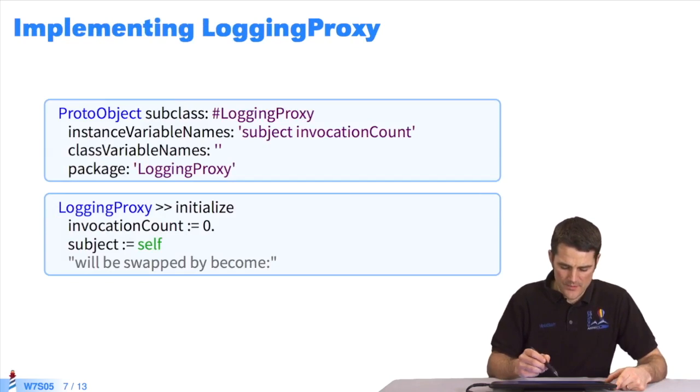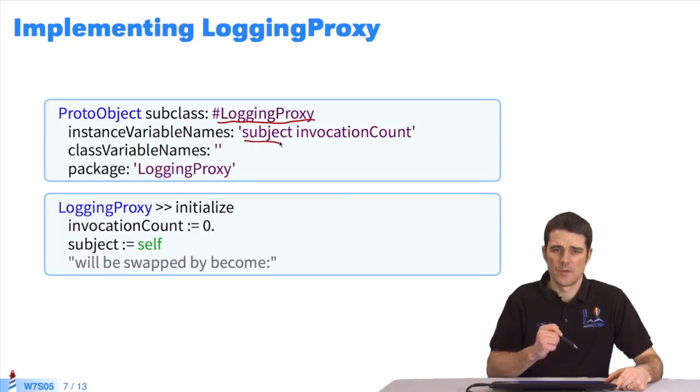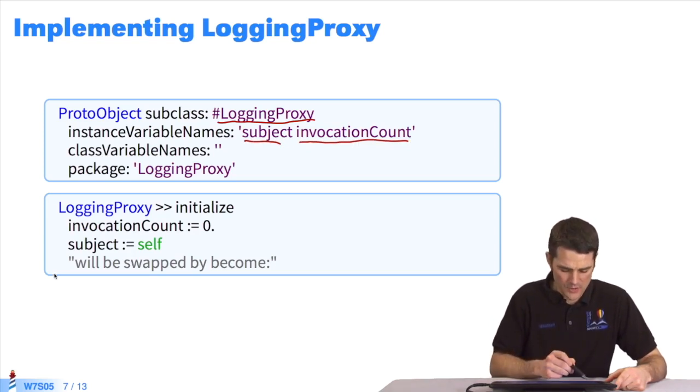First, we create a proxy object. We give the proxy object a subject, which is the object we're going to replace, or the target. We add invocationCount to increment the counter with each message. We put the counter in initialize at 0, since it has received no messages. Then we add the subject, which is what will be replaced.